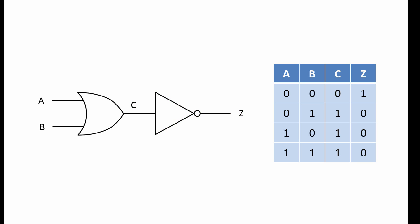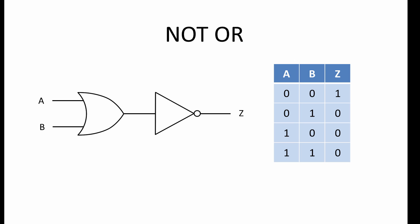So here is our overall truth table. We can discard column C if we are not interested in those values. This combination of gates is sometimes referred to as the NOT OR combination, or NOR for short. It is actually very useful, as you will see in a later video.